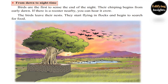From dawn to nighttime, birds are the first to sense the end of the night. Their chirping begins from early dawn. If there is a rooster nearby, you can hear it crow. The birds leave their nests, start flying in flocks, and begin to search for food.